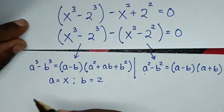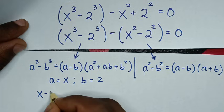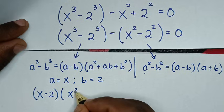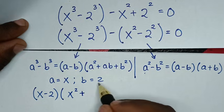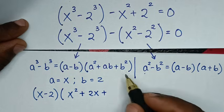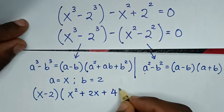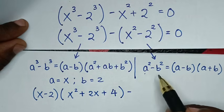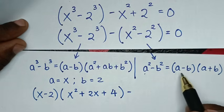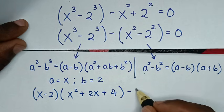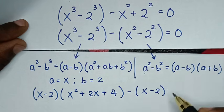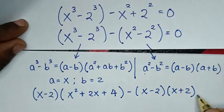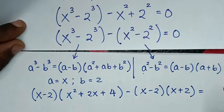Applying the difference of cubes to x cubed minus 2 cubed gives: (x minus 2)(x squared plus 2x plus 4). Applying the difference of squares to x squared minus 2 squared gives: (x minus 2)(x plus 2). So the full equation becomes: (x minus 2)(x squared plus 2x plus 4) minus (x minus 2)(x plus 2) equals 0.